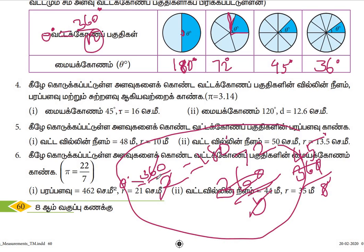That is the formula: theta degree is equal to 360 degree by n. Let's take a look.